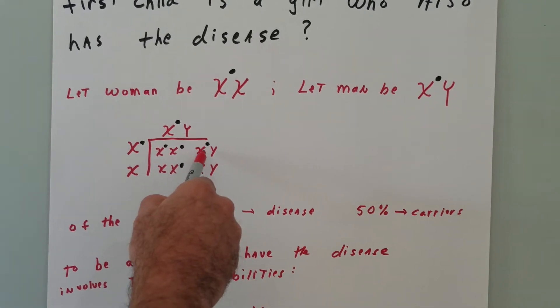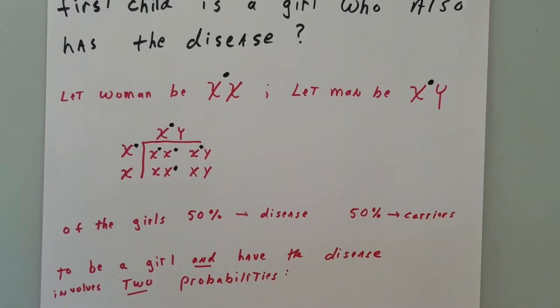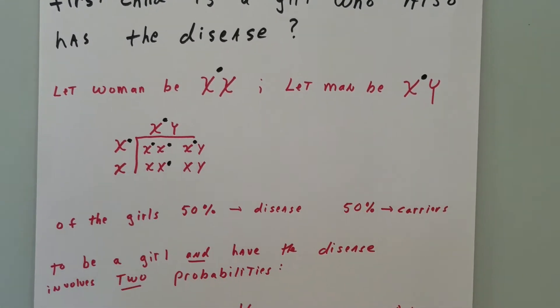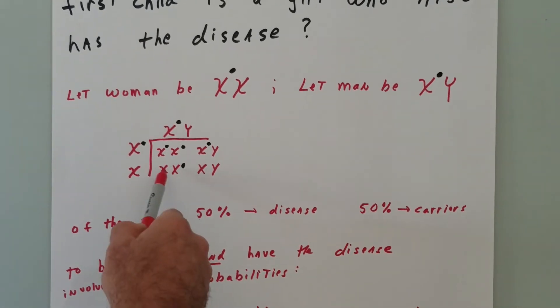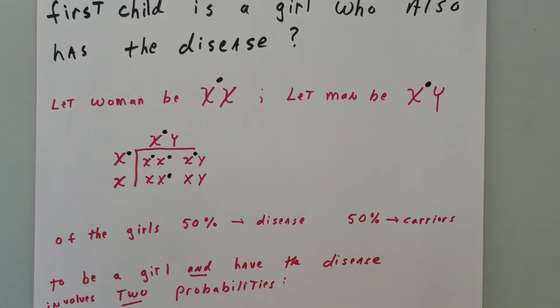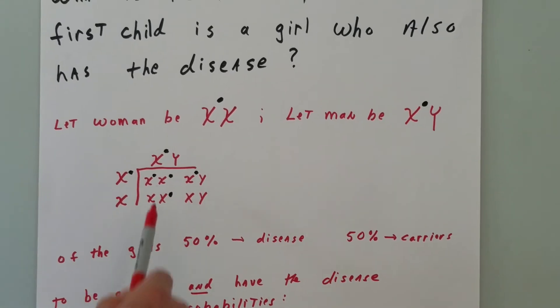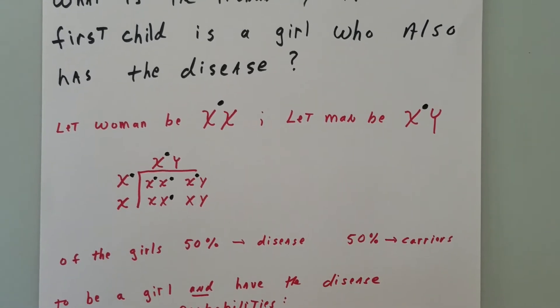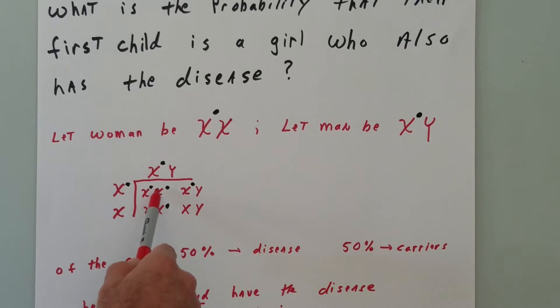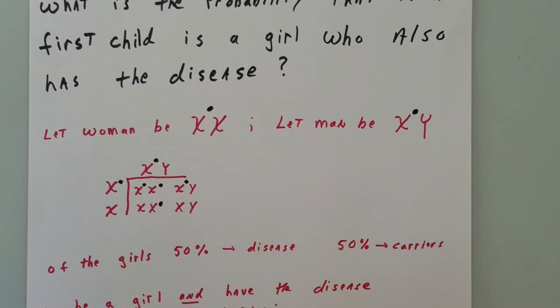If you look at the next one, you have a boy who is diseased. This boy is normal and this girl is a carrier. So of the girls, as you can see, 50% of the girls have the disease and 50% are carriers.